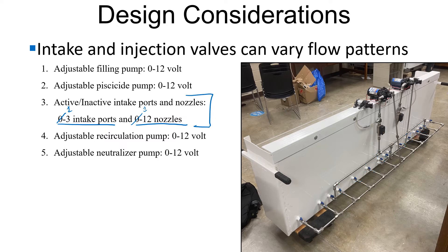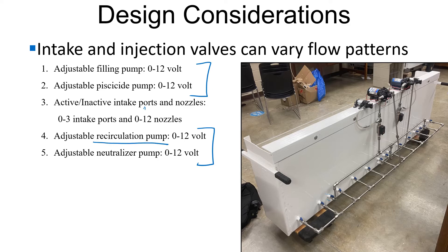The goal is to minimize the number of injection nozzles and intake ports needed in the full-scale ballast tank, since each costs money to drill, install, and pipe. On the right-hand side we have an adjustable filling pump and adjustable pisocide pump, both zero to 12 volts. The recirculation pump may not need to be used at all depending on vacuum in the intake line. The recirculation pump is the large one, and the smaller neutralizer pump is connected on the vacuum end.